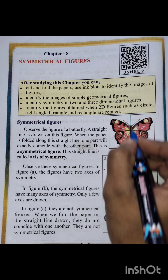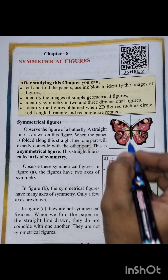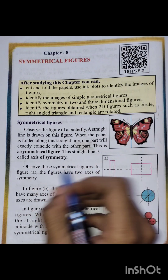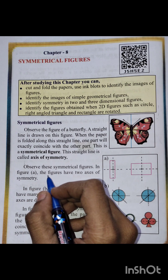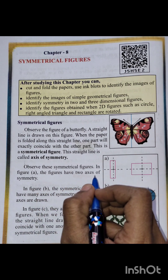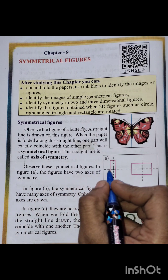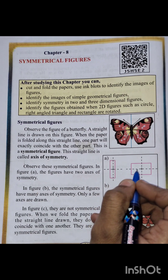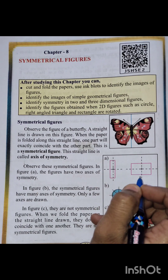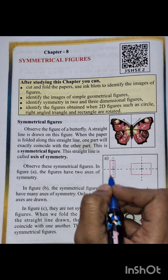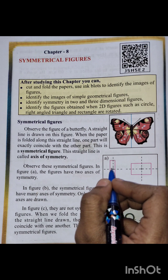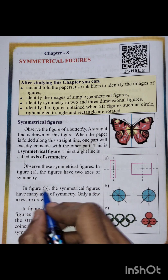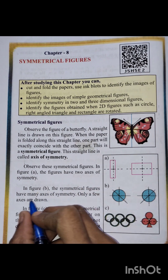This straight line is called the axis of symmetry. Observe these symmetrical figures. In figure A, the figures have two axes of symmetry — one and two. In the second figure also, one and two. If you fold this you'll get exactly the same part on each side.